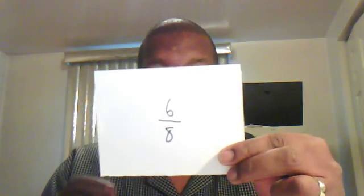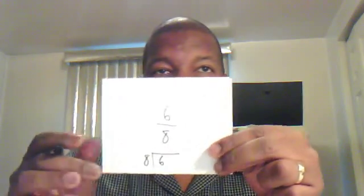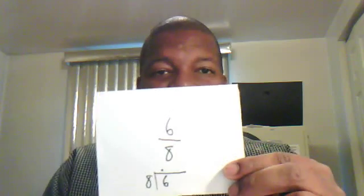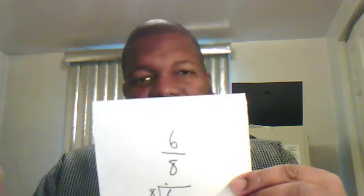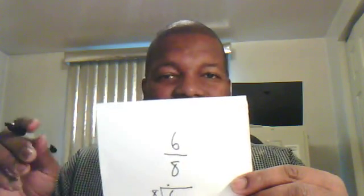Let's do another one. This one is going to be six over eight. I'm going to change it — you always put the smaller number on the inside, so it's eight on the outside, six on the inside. Eight does not go into six, so it's going to be point. Then you ask yourself: how many times does eight go into sixty? We know that eight times seven is fifty-six, so it's seven.